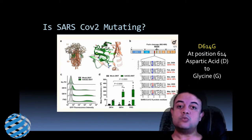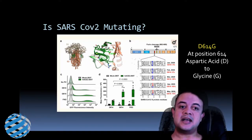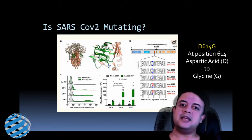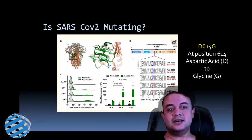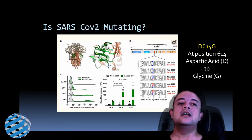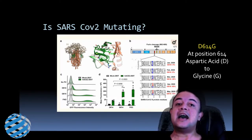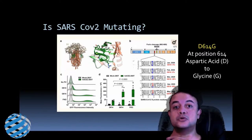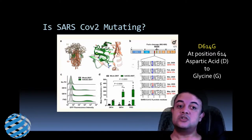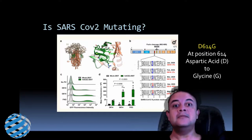Molecular biologists call this a point mutation or single nucleotide polymorphism, and there is a set way of naming these SNPs. So this mutation is named d614g. What does that mean? D is basically an amino acid called aspartic acid. Originally, the codon coding for the amino acid aspartic acid was at position 614 in the RNA genome of this coronavirus, and because of the mutation it has now changed to G, which codes for glycine.